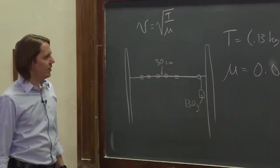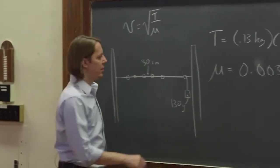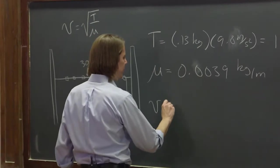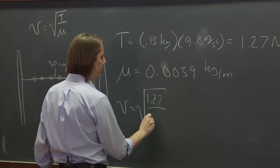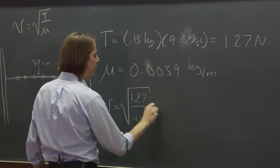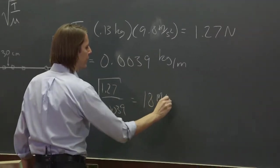Now, let's calculate what is the velocity. Velocity is the square root of 1.27 over 0.0039. If you work that out, you get about 18 meters per second.